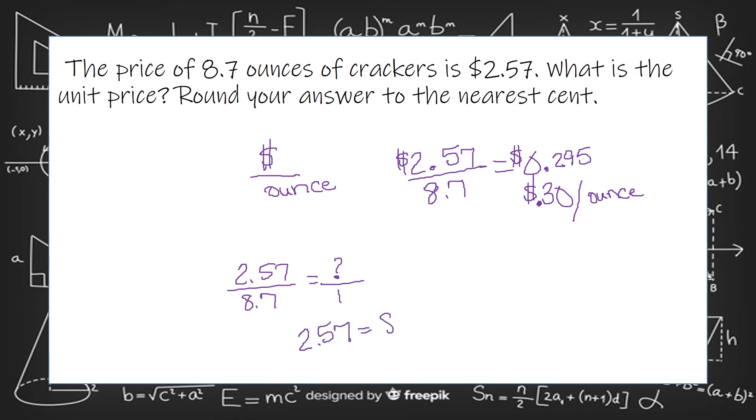You could have also set this up as a proportion: 2.57 over 8.7 equals the price over 1 ounce, cross-multiplied. So 2.57 times 1 is 2.57, and 8.7 times question mark. Then divide by 8.7.